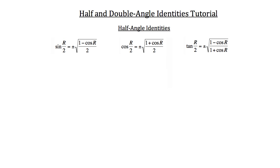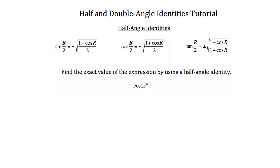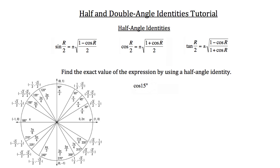Let me show you what I mean. Let's take a look at this problem: find the exact value of the expression by using the half angle identity, and the expression is the cosine of 15 degrees. If you look at your unit circle, you won't see a 15 degree angle — it's not a commonly used angle. However, I can use the half angle identity for cosine to solve this problem.